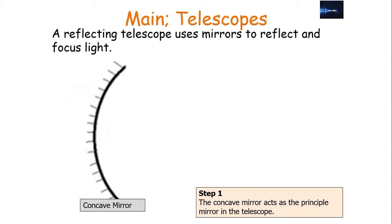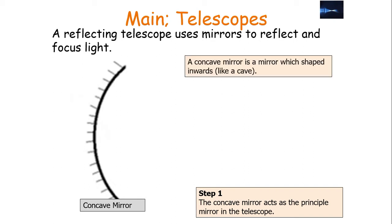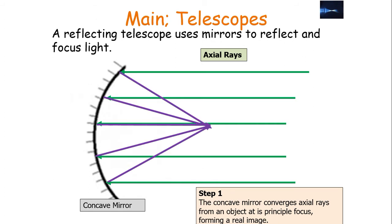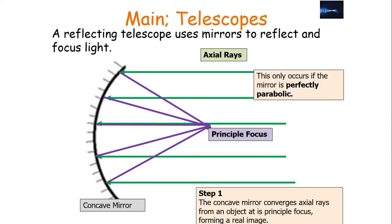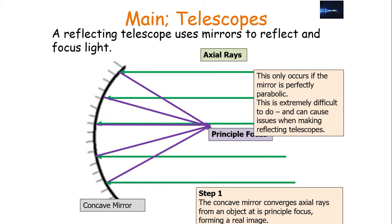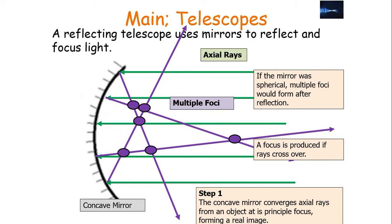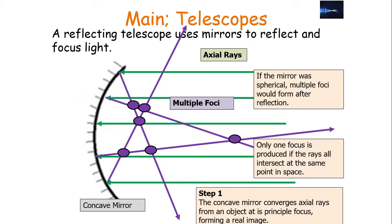The concave mirror acts as the principal mirror in the telescope — it's concave because it's shaped inwards like a cave. Axial rays hit the concave mirror and reflect back to a point called the focus or principal focus, as it's the primary mirror. This process will only occur if the mirror is perfectly parabolic. This is extremely difficult to achieve and can cause issues when making reflecting telescopes. If the mirror is not completely parabolic and is slightly spherical, multiple foci will form after this first reflection — a focus is produced only if all rays cross at the same point.